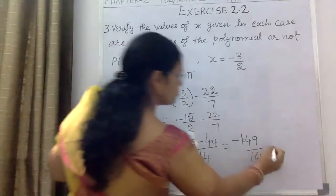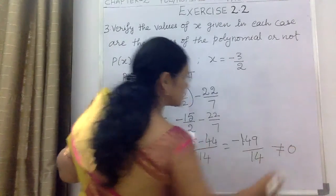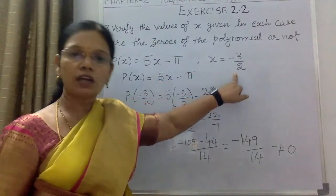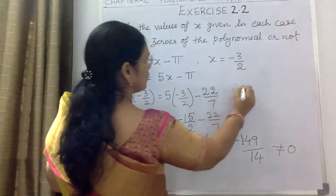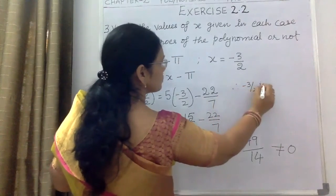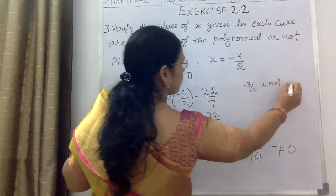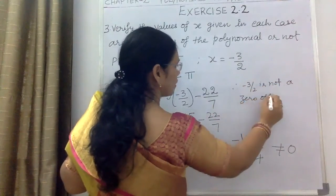No, it is not equal to 0. By this we can say that -3/2 is not a zero of the given polynomial.